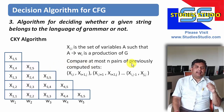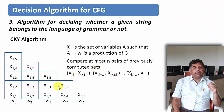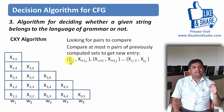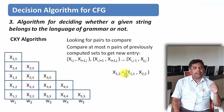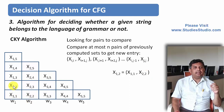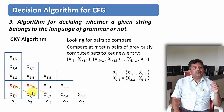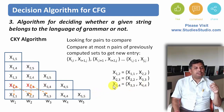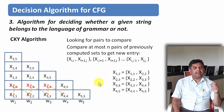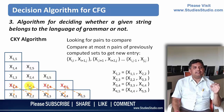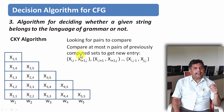Now we compare pairs of previously computed sets to fill the rest of the data. To fill cell X12, we take X11 and X22, and combine them. For X23, we take X22 and X33. For X34, we take X33 and X44. For X45, we take X44 and X55. Using the data already computed in the first row, we fill in the second row. Then with rows one and two filled, we move to the third row.